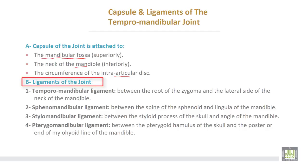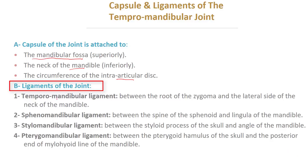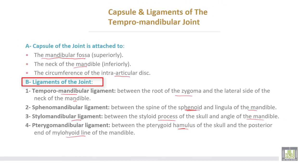Ligaments of the joint: number one, the temporomandibular ligament between the root of the zygoma and the lateral surface of the neck of the mandible; number two, the sphenomandibular ligament between the spine of the sphenoid and the lingula of the mandible; number three, the stylomandibular ligament between the styloid process of the skull and the angle of the mandible; number four, the pterygomandibular ligament, sometimes called the pterygomandibular raphe, between the pterygoid hamulus of the skull and the posterior end of the mylohyoid line of the mandible.